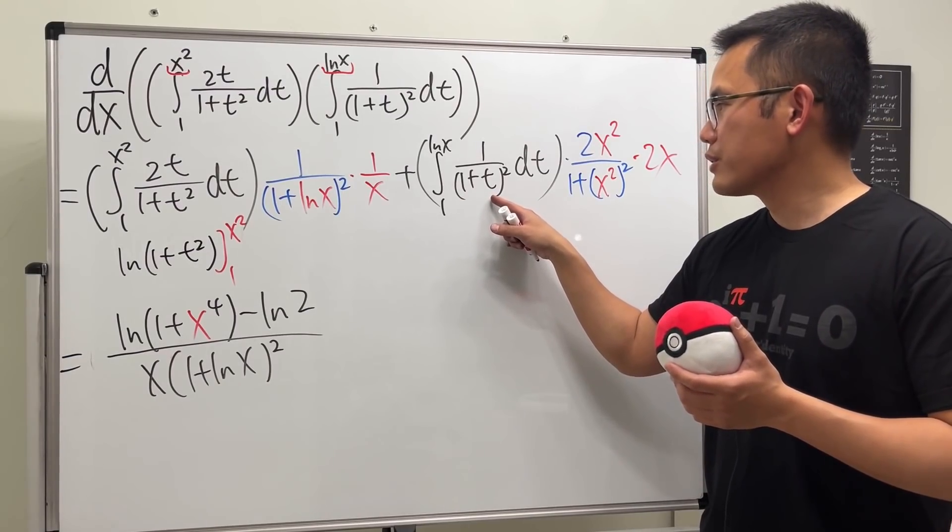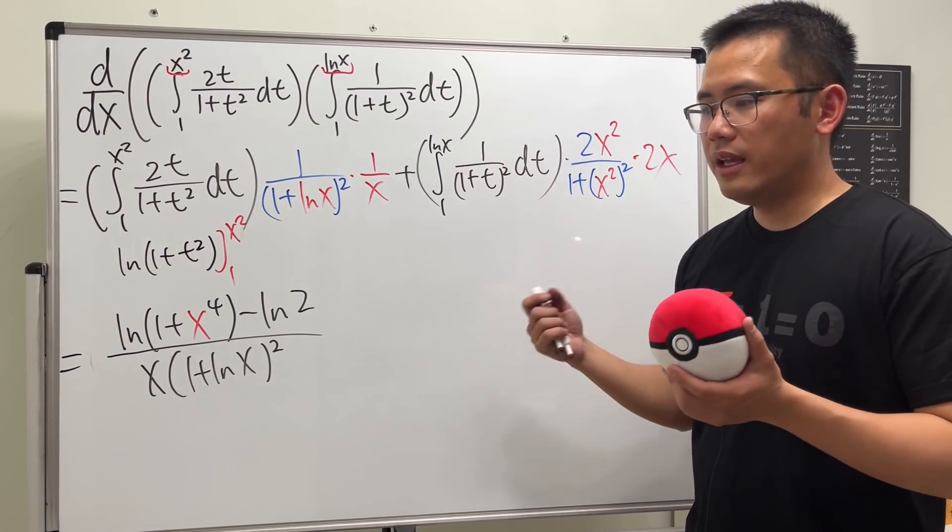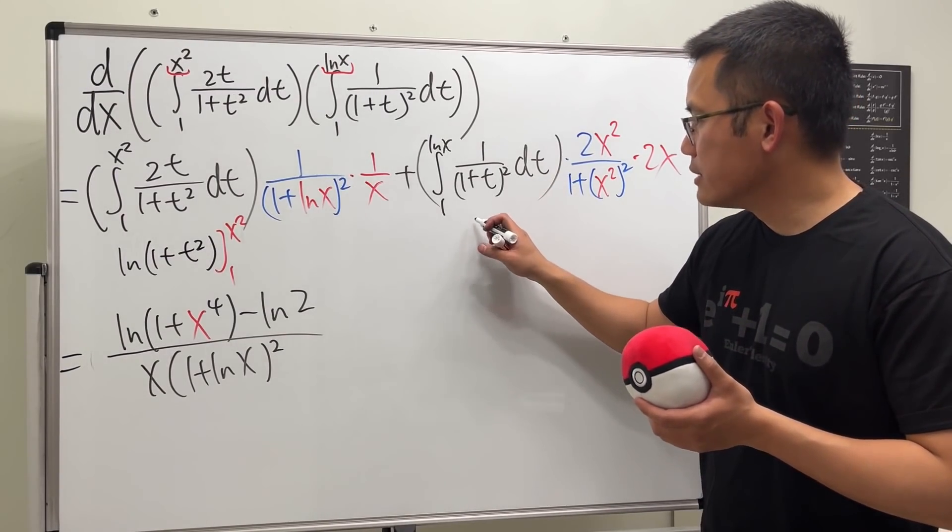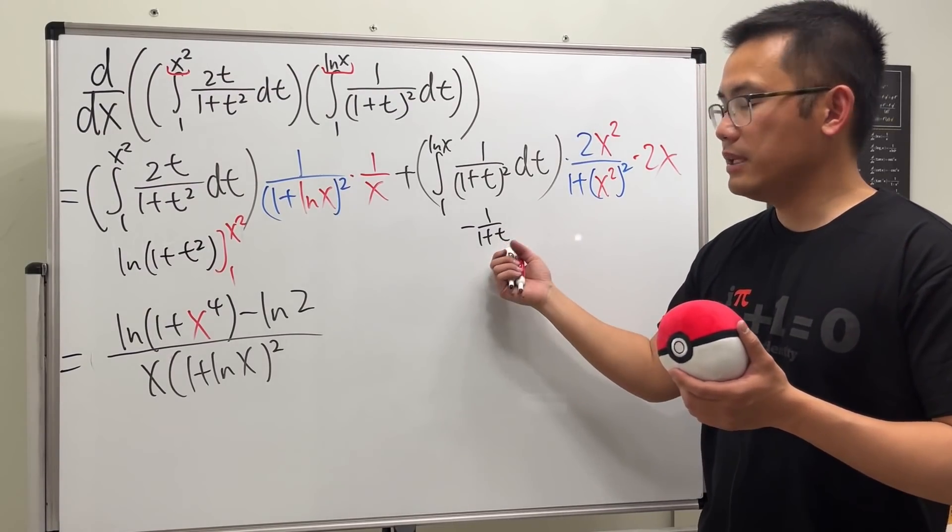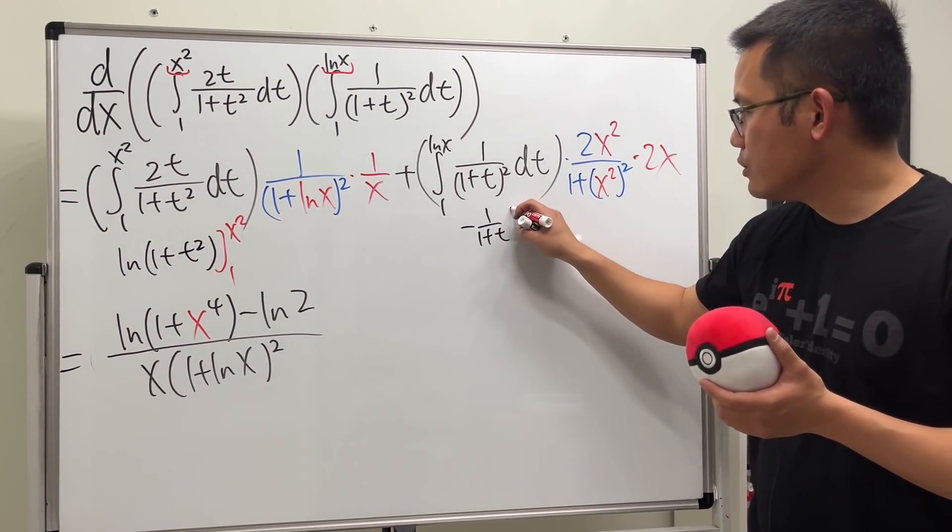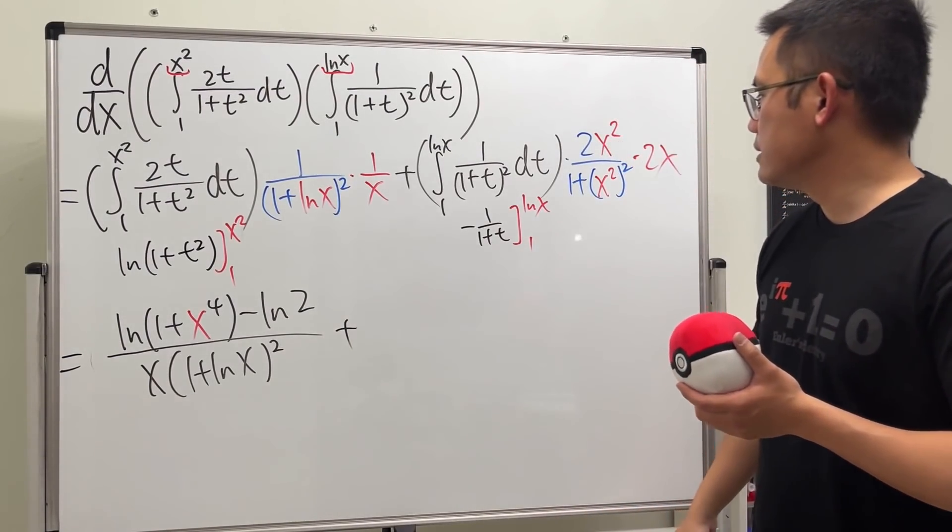Let's go ahead and do the same thing for the second part. Do this in your head. Let u equal this, which is just going to be integrating 1 over u squared. And if you do that, you get negative 1 over u. So this part is negative 1 over 1 plus t. Just integrate that.